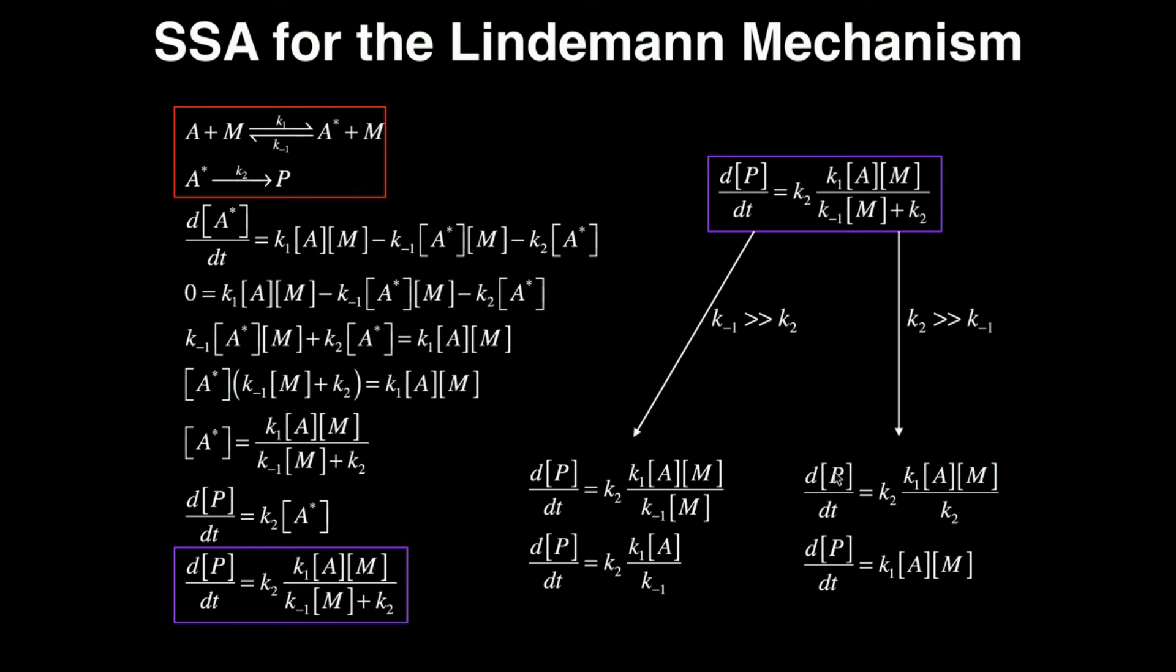So my rate of formation of P with respect to time is now K2 times the numerator, K1[A][M], then all I have left in the denominator is K2. Notice now the K2s cancel and all I'm left with is the rate of formation of P with respect to time is equal to K1[A][M]. That's as far as simplified as this can be.